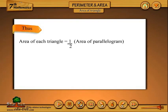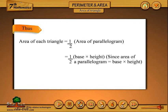Thus, area of each triangle equals 1 by 2 into area of parallelogram, equals 1 by 2 into base into height. Since area of a parallelogram equals base into height, equals 1 by 2 into B into H, or 1 by 2 into BH in short.